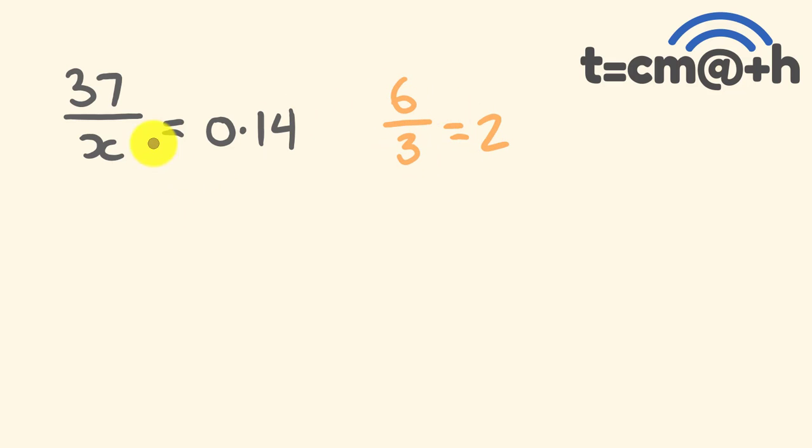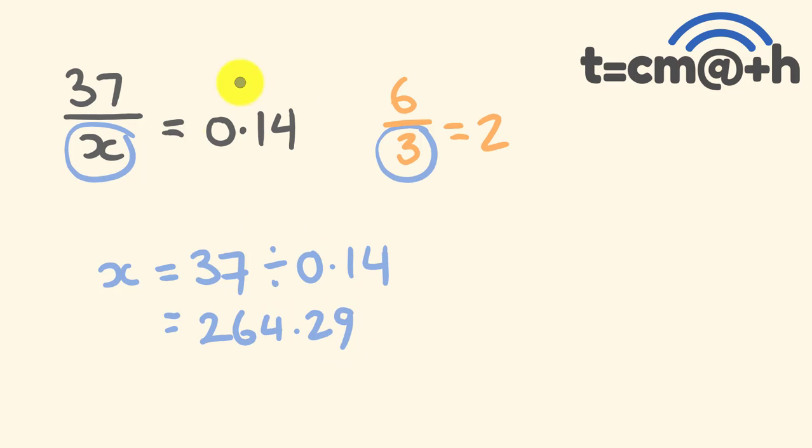We're trying to find out x here, which is in the same position as the 3. I could set this up and say 3 is going to be equal to 6 divided by 2. So we're going to go along and do that same pattern here. x is going to be equal to 37 divided by 0.14. And you know for certain that you've got it in the right order then. You might get the answer of 264.29.